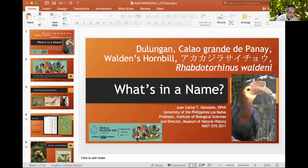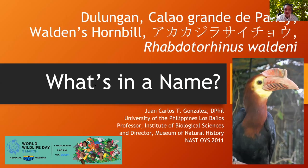For today I'll be talking about hornbills, looking into the names and how we derive those names. My title is quite long: Dulungan, Kaleo Grande de Panay, Walden's Hornbill, and of course Rabdotorinus Waldenai. This is a topic about hornbills and birds in general and how we name things — what's in the name — encouraging our audience to do studies on not just ornithology, but also taxonomy and ethno-ornithology.